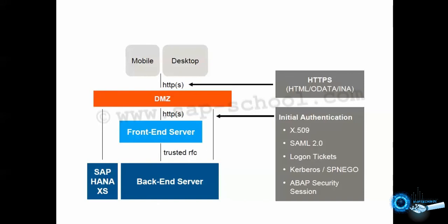When a user launches an SAP Fiori application, the launch request is sent from the client to the ABAP front-end server via the SAP Fiori launchpad. During the launch, the ABAP front-end server or the gateway server authenticates the user using authentication mechanisms or single sign-on mechanisms. The different authentication methods available are X509, SAML 2.0, logon tickets, Kerberos, and ABAP security session. This is not a complete list, but a selection.